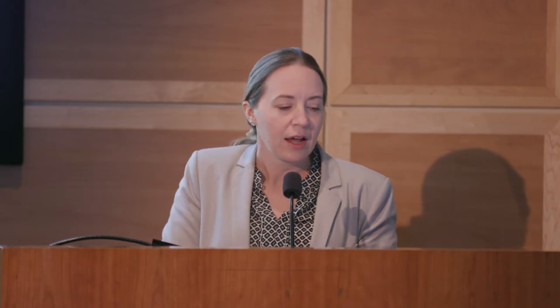Even though the patient has thrombocytopenia, it isn't really a bleeding problem — what they present with is thrombotic complications. Both arterial and venous thrombosis can be seen, at about a four-to-one ratio, so venous thrombosis is the more predominant clinical feature. Other adverse findings include local injection site reactions and systemic anaphylactic reactions to the heparin infusion, though these are much rarer.